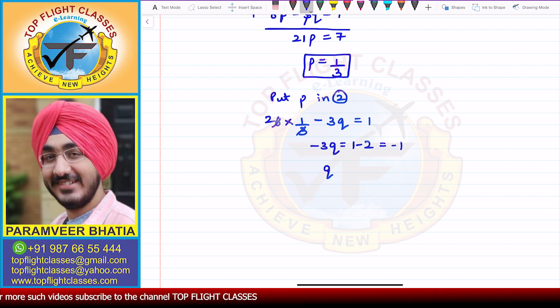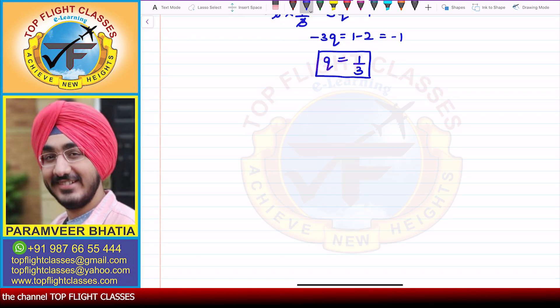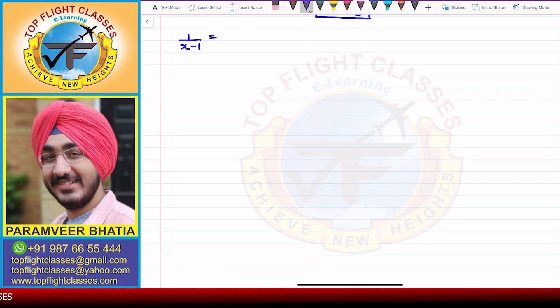So -3q = -1, so q comes out to be 1/3. From here, in the starting I put 1/(x-1) = p.